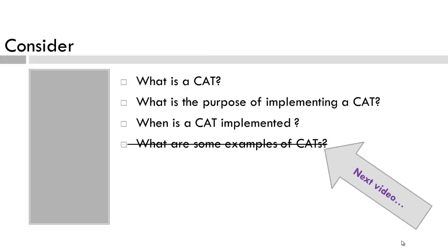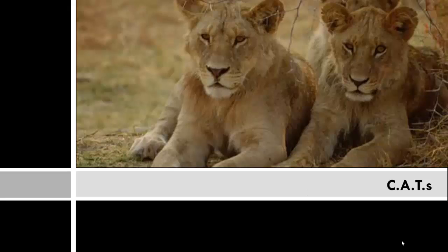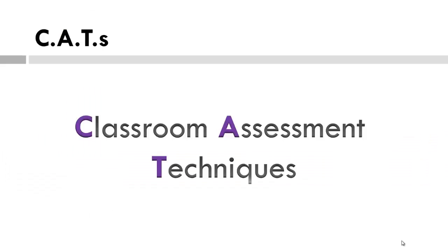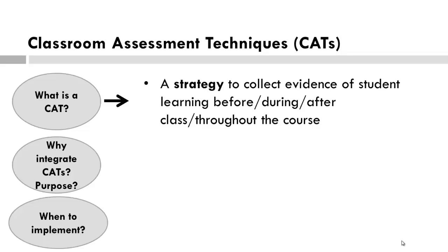Keep a list and we'll discuss. Let's look at what we mean by CATs. No, we don't mean the feline type, but rather classroom assessment techniques. A CAT, or classroom assessment technique, is a strategy to collect evidence of student learning, not just at the end of a period of instructional time or summative assessment, but rather, CATs are examples of formative assessments.